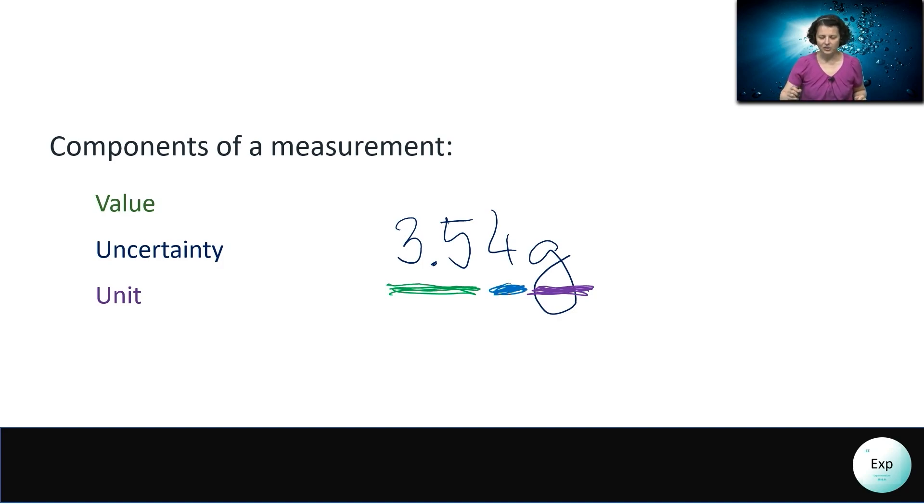On a graduated cylinder, if we have 35.3 milliliters, the milliliter is going to be our unit. The uncertainty is going to be the 3, and our value is going to be the 35. In a 50 milliliter graduated cylinder, or in a 100 milliliter graduated cylinder, the gradations on the graduated cylinder are always by individual centimeters. We will know exactly where the 35 and the 36 are, but we don't know anything about the distance between the two of them. The 3 is going to be an estimate that says it is a little closer to the 35 than it is to the halfway point between the 35 and 36 milliliters.